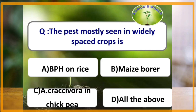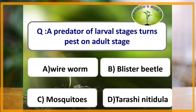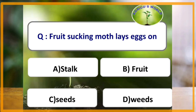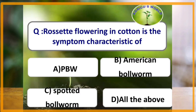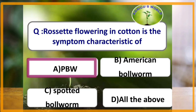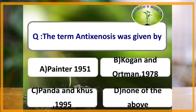The pest mostly seen in widely spaced crops is Helicoverpa armigera in chickpea. Which one of the following is a predator in larval stage and turns as a pest in the adult stage? The answer is blister beetle. Fruit sucking moth lays eggs on weeds. Rosette flowering in cotton is a characteristic symptom of pink bollworm. The term antixenosis was given by Kogan and Oatman in 1978.